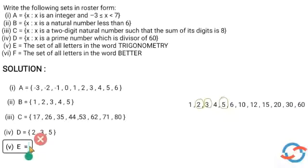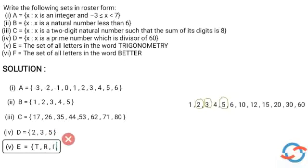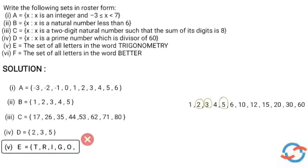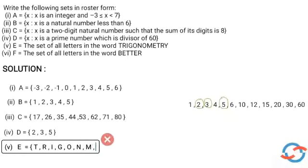E is equal to: first letter T, next R, next I, next G, next O, then N, then again O is not added because we already added it, next M, then E, then T is already added, then R is already added, so last letter Y.